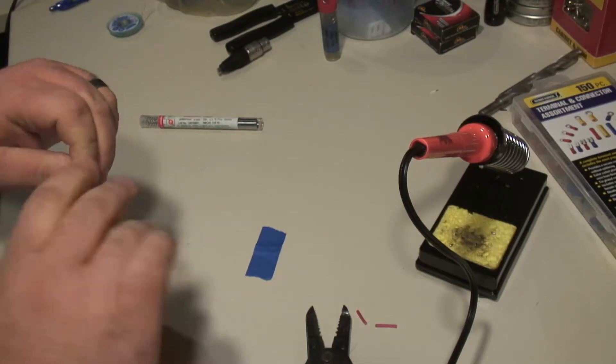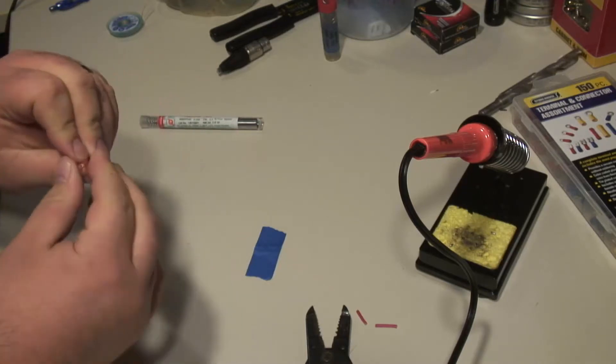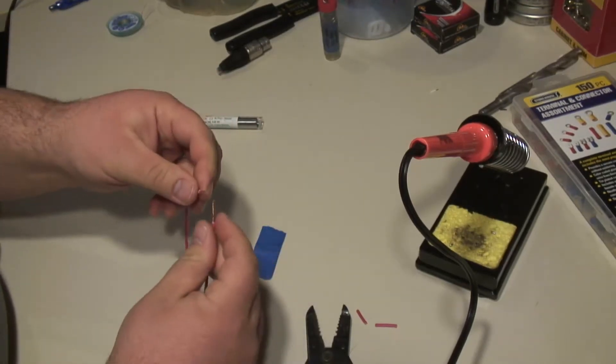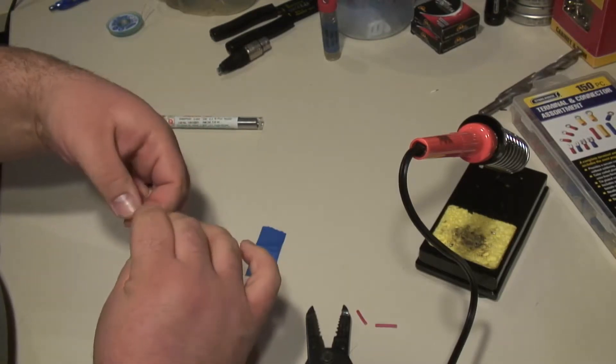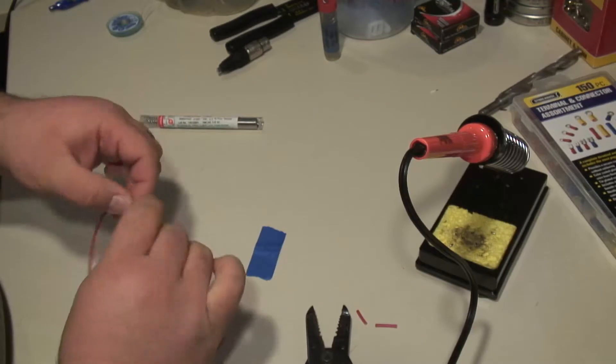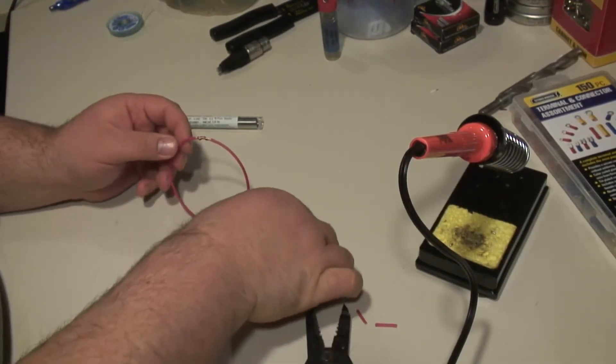Since it's stranded, I try to twist it together to kind of keep things neat and clean. There we go, so I don't have any stray pieces sticking out, and then we'll just twist those two stranded conductors together there and try to make sure we don't have anything sticking out too much.